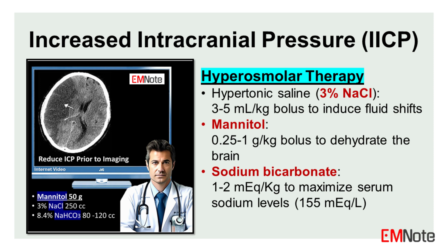Sodium bicarbonate: in cases of metabolic acidosis, 1 to 2 milliequivalents per kilogram of sodium bicarbonate can be administered to maximize serum sodium levels up to 155 milliequivalents per liter, thereby enhancing the osmotic gradient and reducing ICP.